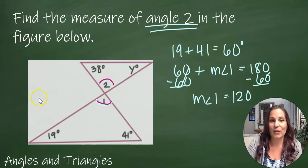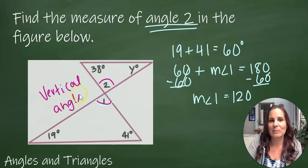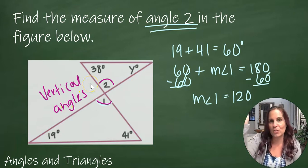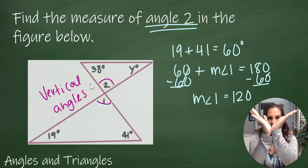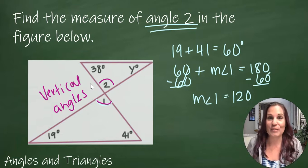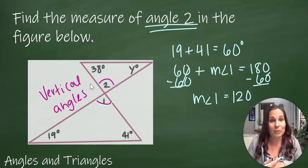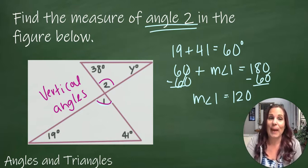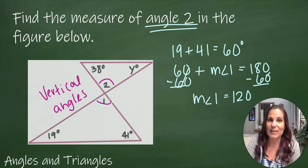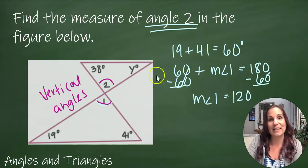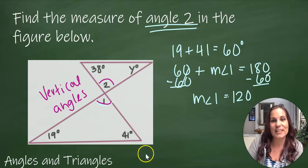Now angle 1 and angle 2 are a special pair of angles. These two angles are called vertical angles. You can kind of remember that name because when two lines cross, you get a V this way and a V that way, and V for vertical. So angle 1 and angle 2 are vertical angles. That means that they're always congruent. So if angle 1 is 120 degrees, then so is angle 2.